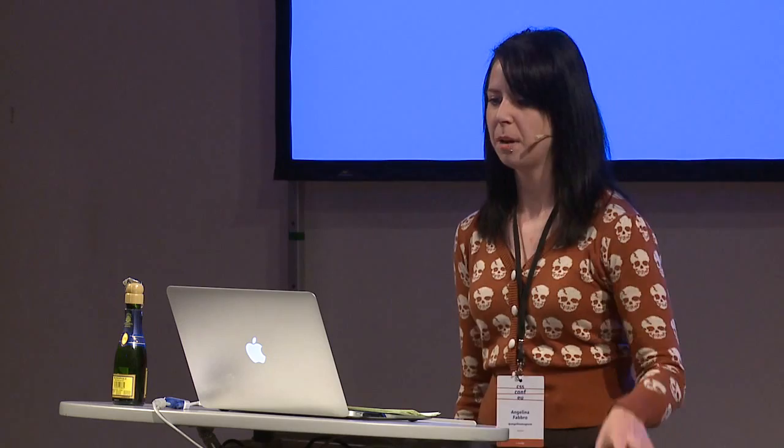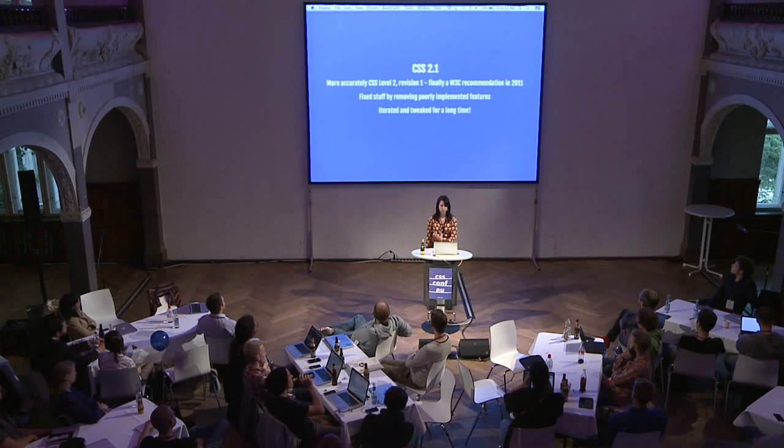The first CSS1 spec was published in 1996. It included core things like font properties, text attributes and alignment, color of text, backgrounds, margin, border, padding, and positioning. CSS2 was published in 1998 as a superset of CSS1 — we got more positioning like absolute, relative, fixed and z-index, oral style sheets, bi-directional text support, and media types. Then CSS2.1 was developed, finally becoming a recommendation in 2011, fixing things by removing poorly implemented features.